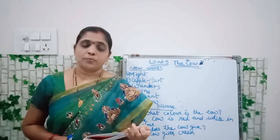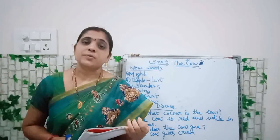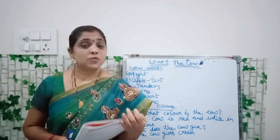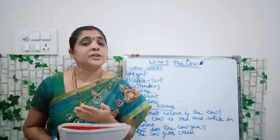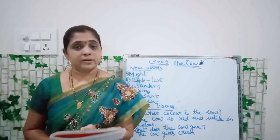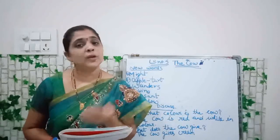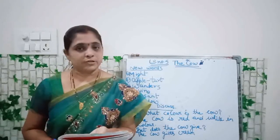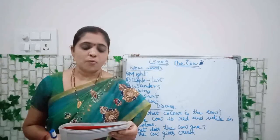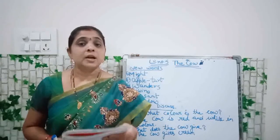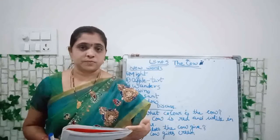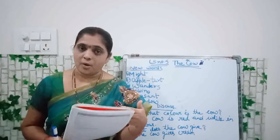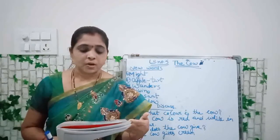The friendly cow — the cow is friendly. Okay. All red and white — means the cows are of different colors, like red and white. Red color cows, white color cows. Okay. What is the color of the cow? Red and white. Then, 'I love with all my heart' — means we like the cows with all our heart. Heartful love. We love cows.